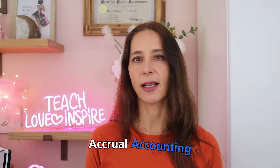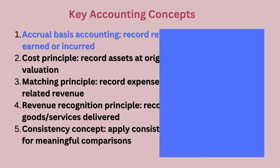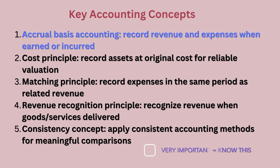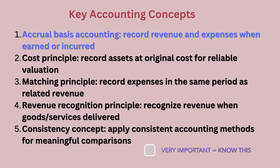The first one is accrual basis accounting. GAAP requires companies to record revenue and expenses when they are earned or incurred, rather than when the cash is received or paid. This ensures that financial statements reflect the economic reality of a business, even if cash flows haven't occurred yet.